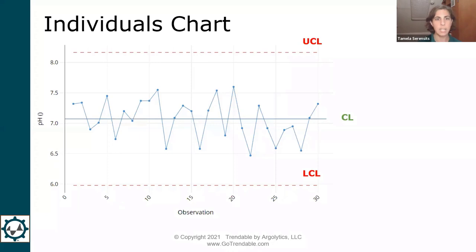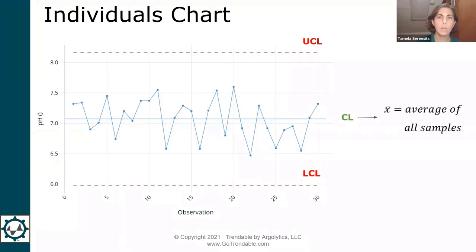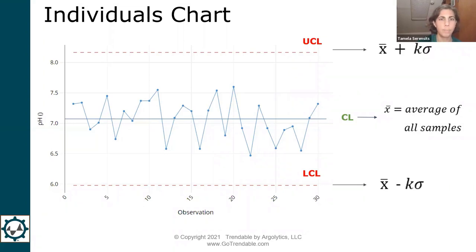Let's start with the most common control chart: the individuals chart, or I-chart. Each point on this chart represents one measurement — for example, soil pH — plotted in time order. The first truck load is the first point, the second truck load is the next point. The center line is the average of all the samples plotted — in this case 30 points. Once you have the center line, you can plot the upper control limit (UCL) and the lower control limit (LCL).